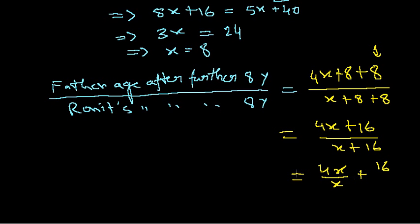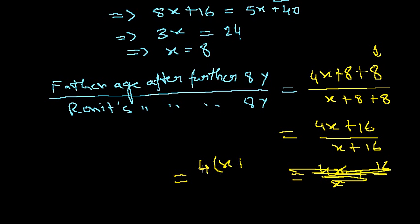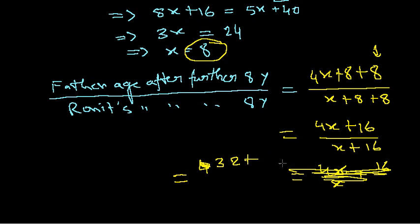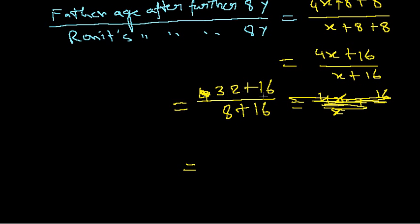Let's substitute x = 8 directly. Father's age: 4(8) + 16 = 32 + 16 = 48. Ronit's age: 8 + 16 = 24. The ratio is 48 divided by 24, which equals 2. So after a further eight years — that is, sixteen years from now — the father will be exactly 2 times Ronit's age.